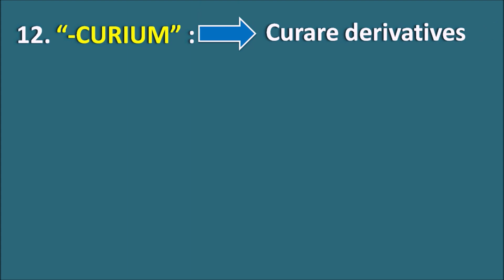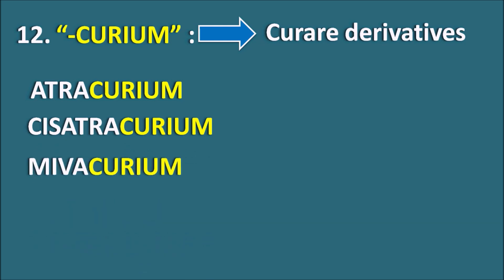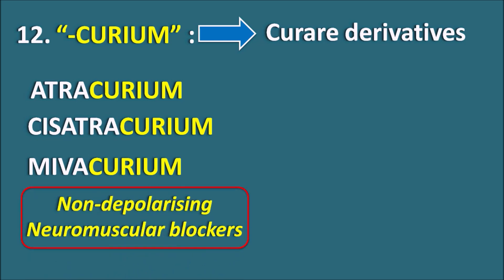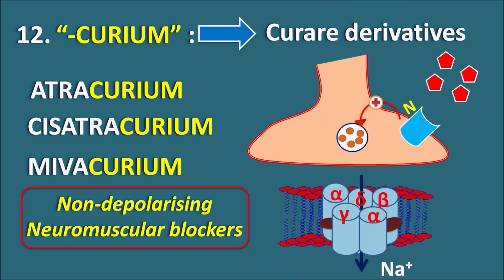Twelfth one is the suffix -curium. This indicates they are curare derivatives. Curare alkaloids are natural alkaloids that produce the drug D-tubocurarine, which acts as a neuromuscular blocker. Synthetic analogues derived from D-tubocurarine include atracurium, cisatracurium, and mivacurium. These are non-depolarizing neuromuscular blockers acting at the neuromuscular junction. They bind to post-synaptic nicotinic H-type receptors, blocking sodium entry and depolarization in the muscle. They also act on pre-synaptic nicotinic receptors, decreasing acetylcholine release. In this way -curium compounds act both post-synaptically and pre-synaptically to produce muscle paralysis.